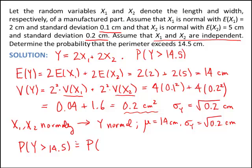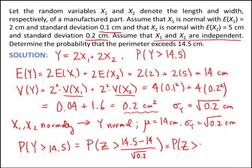Since y is normal, I'll find a z-score and use a cumulative distribution table. Converting to a standard normal z, I take 14.5, subtract off the mean of y, and divide by its standard deviation. This gives the probability that z is greater than 1.12, where z is a standard normal random variable. Looking up the z-table, the probability that z is greater than 1.12 is 0.13 — and that is the final probability.